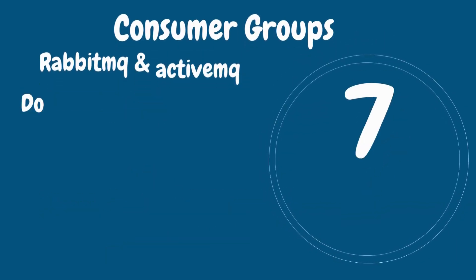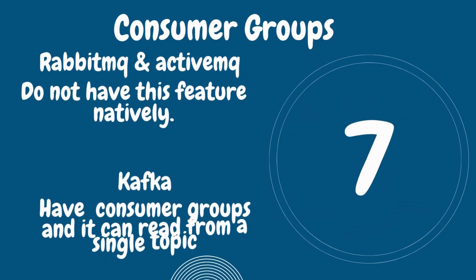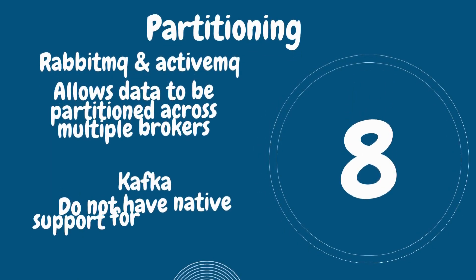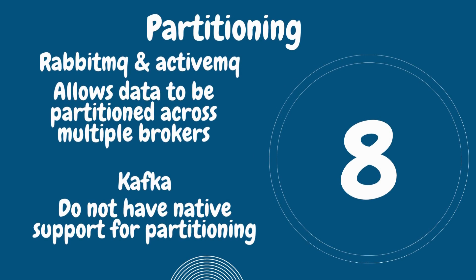Number seven is consumer groups. Kafka supports the concept of consumer groups, which allows multiple consumers to read from a single topic. ActiveMQ and RabbitMQ do not have this feature natively.